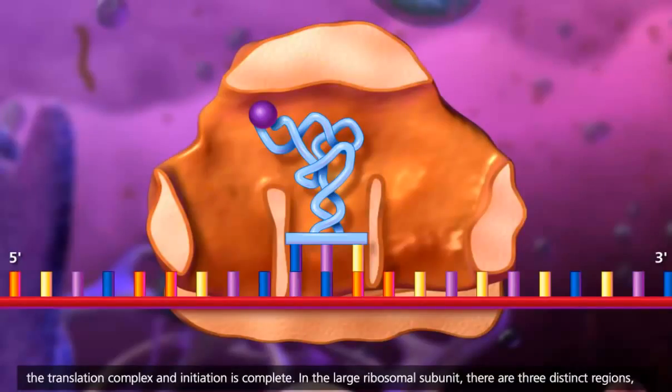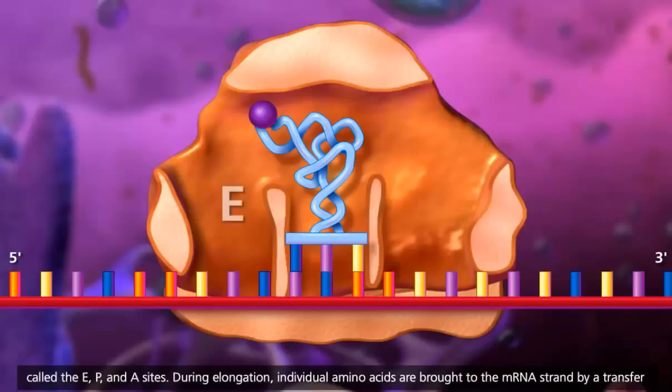In the large ribosomal subunit, there are three distinct regions called the E, P, and A sites.